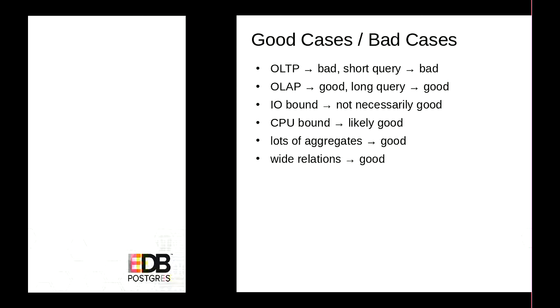Even for CPU-bound queries, JIT compilation helps most when you have lots of complex expressions — for example, a query that does 10 aggregates over a table is very likely to see significant performance improvements. But if you have a query doing a lot of index nested loop joins across a hundred tables each returning one row, the overhead is in the indexing code which is not JIT-compiled, so you're unlikely to see much benefit. It really depends on your workload.